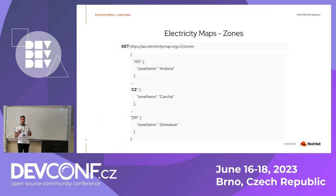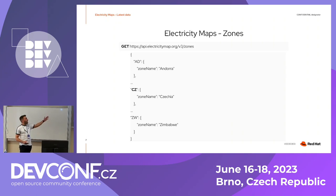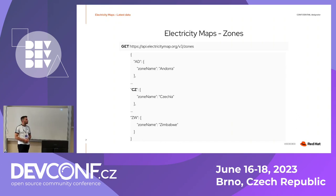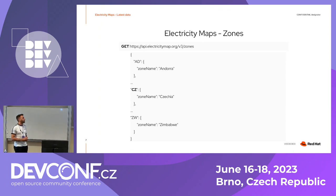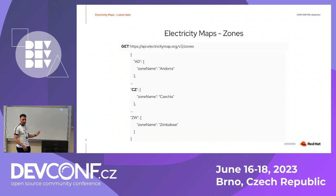First of all, we'll be obtaining the zone code for the region we want to know the current carbon emissions for, or to read the forecast. This is a public API, so registration is not needed and everybody can trigger it. Looking at the response, it is composed of a large list of supported countries and regions. We have to look for the one we're interested in — in this case, Czechia. We are only interested in the zone code, so for Czechia it will be CZ, not the zone name which is already Czechia.